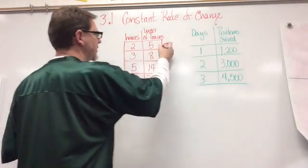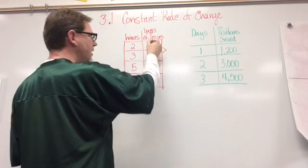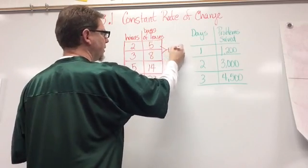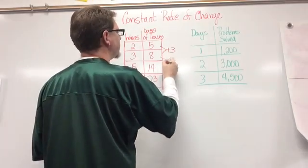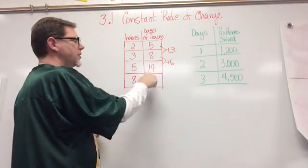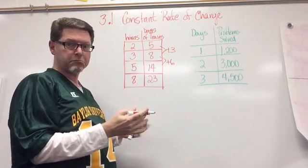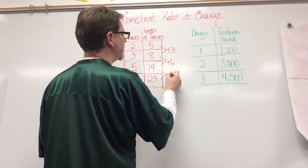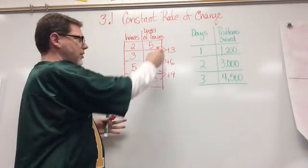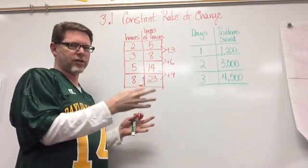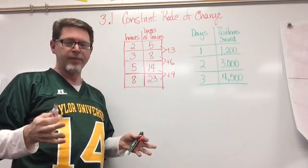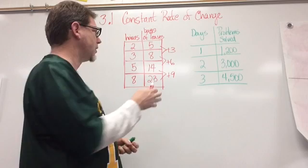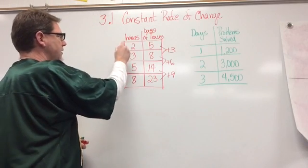So I'm going to put out here on the side, how did I get from five to eight? I added three. How did I get from eight to 14? I added six. And how did I get from 14 to 23? I added nine. Now at first glance you think, ooh, those aren't all the same. It may not be constant rate of change. But let's keep going because we can't tell just by looking at the x's and the y's.